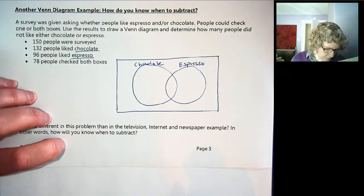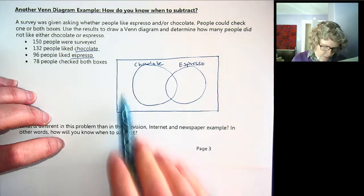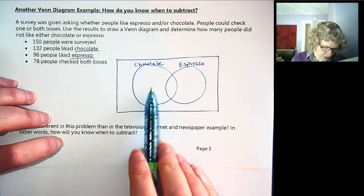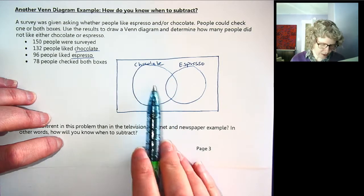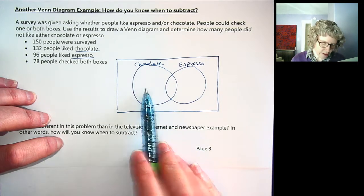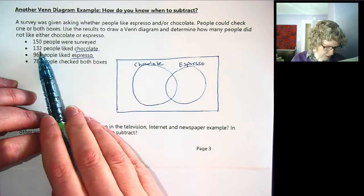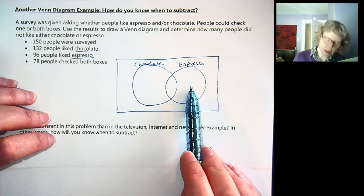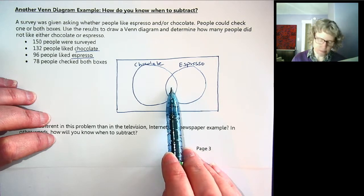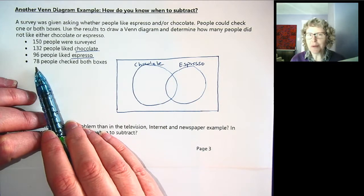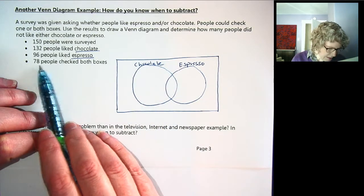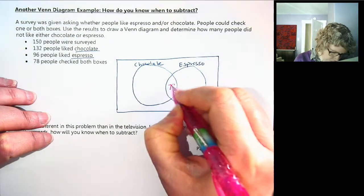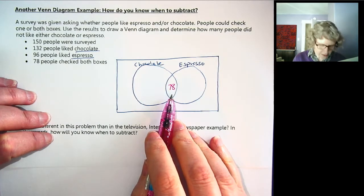Okay, 150 people were surveyed. We know these are all going to add up to 150. 132 people liked chocolate. Well, we don't know exactly where they're going to fit because these folks like chocolate only. These people like chocolate and espresso. So we can't use this number yet. The same thing with the 96. We don't know the people that checked espresso, they also could have checked the other box for chocolate, which would put them in here. So we actually have to work sometimes from the bottom up or the inside out. 78 people checked both boxes. So we know the intersection. 78 people checked both.